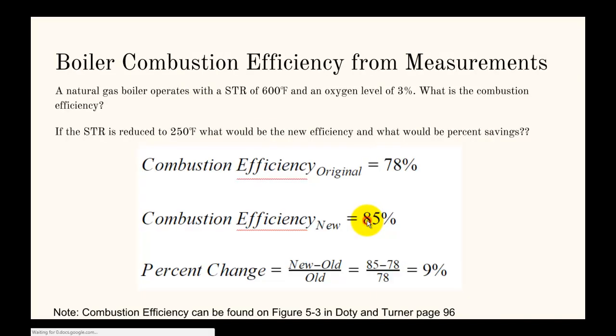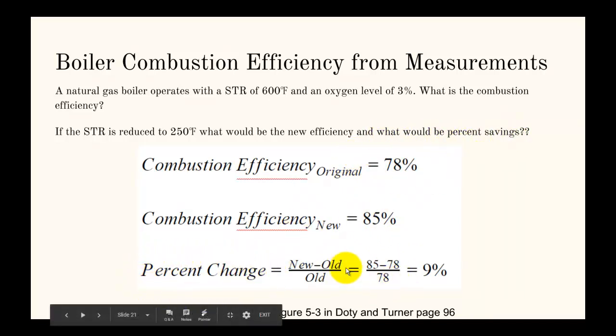Let's jump to our next problem. This is finding the combustion efficiency from measurements. Whenever you see a measurement of a stack temperature rise and an oxygen level or other measurements, you want to turn right to page 96 in Doty and Turner, which has the graphs you need. We're finding two different efficiencies here, one with an STR of 600 and oxygen level of 3, and then changing the STR to 250 degrees. We go from 78% to 85% efficiency. I ask what the percent savings is, and it's just a percent change formula: new minus old divided by old. In this case, it's 9%.